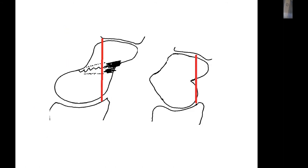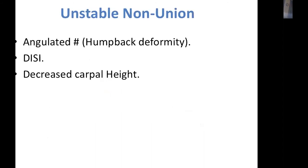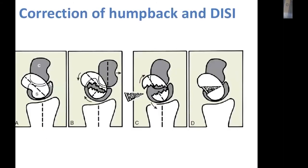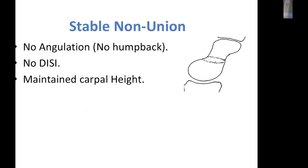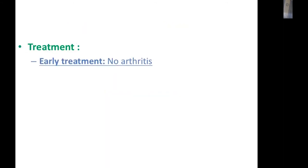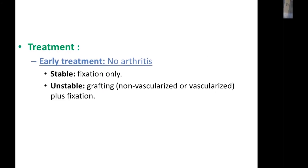Humpback deformity leads to loss of carpal height and DISI displacement of the lunate. In unstable non-union there is angulated scaphoid with humpback deformity, DISI, and decreased carpal height. In stable non-union the scaphoid maintains its height, occurring mainly in proximal pole fractures with no DISI and maintained carpal height — treatment is fixation alone. For unstable non-union, bone grafting is required — either non-vascularized or vascularized depending on MRI vascularity assessment — with rigid fixation using a Herbert screw.